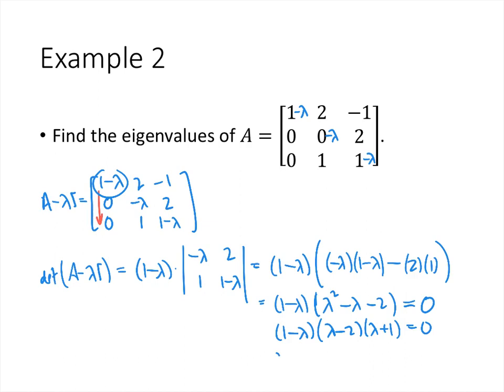That gives us three eigenvalues: lambda equals 1, lambda equals 2, and lambda equals negative 1.